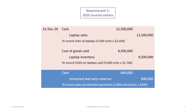Next, we record the sale of the associated extended sales warranty. The company sells 2,800 extended warranties at a selling price of $300, resulting in additional cash of $840,000 with a credit to unearned warranty revenue for $840,000. This is unearned revenue because the extended warranties do not kick in until after one year; revenue cannot be recognized until the extended warranty period begins. There is no associated cost of goods sold here, as extended sales warranties are essentially pure profit unless actual servicing costs are incurred.